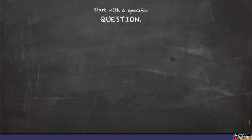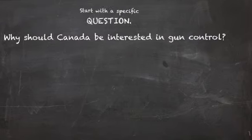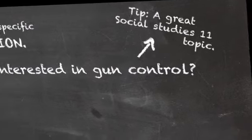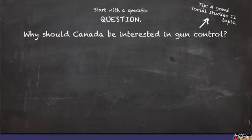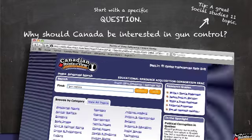For this video, we will use the question: Why should Canada be interested in gun control? So with that, let's start with a basic search term using a key term for this question — gun registry.